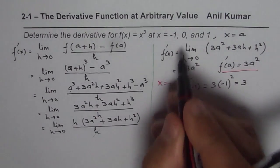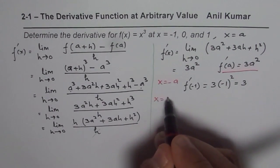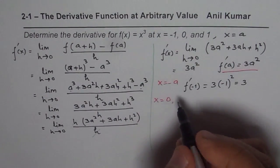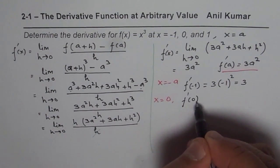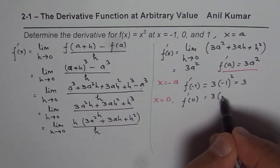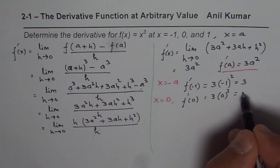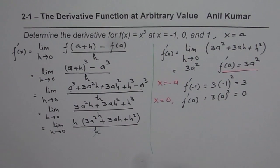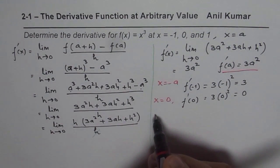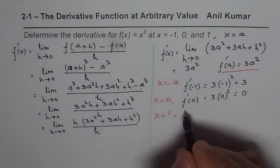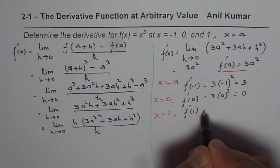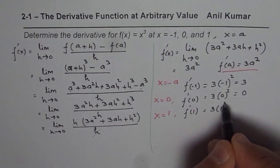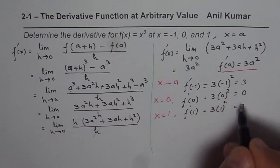At x = 0, we get f'(0) = 3(0)² = 0. Similarly, at x = 1, it will be f'(1) = 3(1)² = 3.